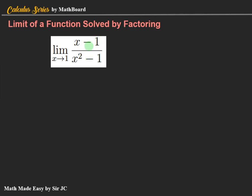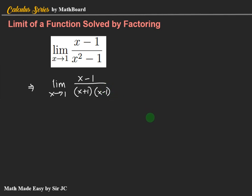To evaluate the limit, you are going to simplify the rational function by factoring. So we have the limit as x approaches 1 of x minus 1 divided by x squared minus 1. As you can see, x squared minus 1 can be factored as x plus 1 times x minus 1. We can now cancel x minus 1, so x minus 1 divided by x minus 1 is 1. So we have 1 over x plus 1.